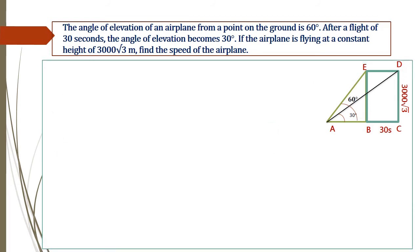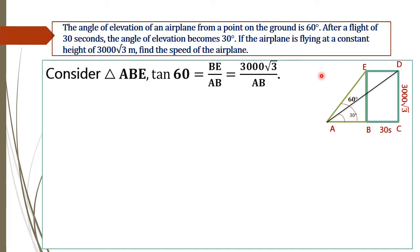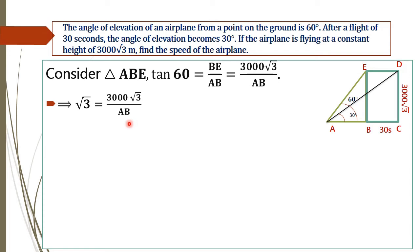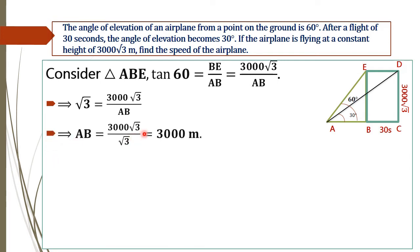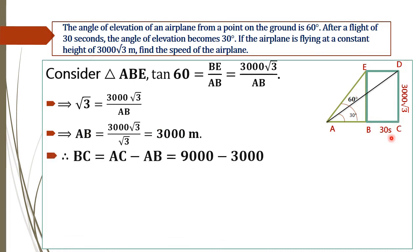Now consider triangle ABE to find the value of AB. In triangle ABE, tan 60° equals BE divided by AB — that is opposite side over adjacent side — which equals 3000 root 3 divided by AB. By cross multiplying, AB equals 3000 root 3 divided by root 3, which equals 3000 meters. Now we have to find the value of BC.